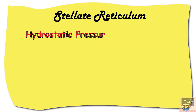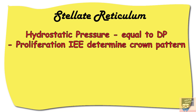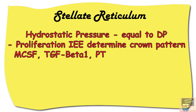The intercellular hydrostatic pressure of stellate reticulum equals that of the dental papilla, so the proliferation pattern of inner enamel epithelium solely determines the crown pattern. Stellate reticulum cells also secrete factors like MCSF (macrophage colony stimulating factor), TGF-beta 1 (transforming growth factor beta 1), and PTHRP (parathyroid hormone related protein) — all osteoclastic factors that recruit osteoclasts and cause bone lysis, secreted coronal to the developing tooth to aid eruption.